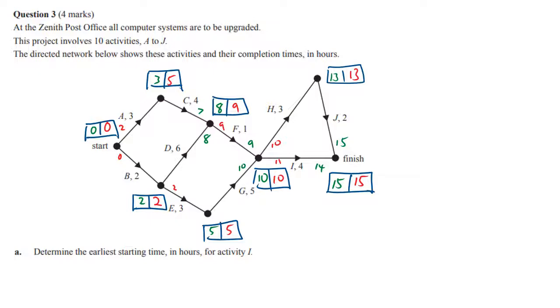We're looking at activity I and we want the EST. Remembering that the EST is the green numbers in my system, the EST for this one is 10. I know my unit is hours, so I'm going to write 10 hours.